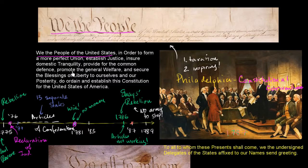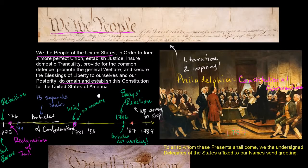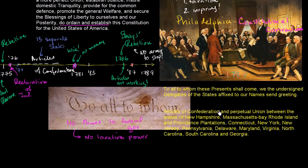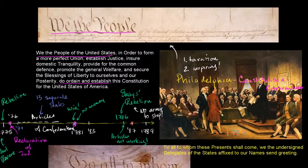We the people gathered together here are the ones who are going to ordain — a nice strong word — and establish this Constitution. It's almost like we have the power, and it's not coming from the divine right of kings or God. The Articles of Confederation in no way share the spirit or the poetry of the Declaration of Independence, while this preamble does — it seems almost a continuation of it.